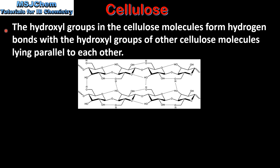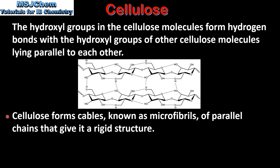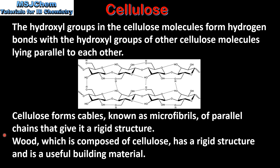The hydroxyl groups in the cellulose molecules form hydrogen bonds with the hydroxyl groups of other cellulose molecules lying parallel to each other. Here we can see two cellulose molecules lying parallel to each other. The dashed lines represent hydrogen bonds between the hydroxyl groups in the parallel cellulose molecules. Cellulose forms cables known as microfibrils of parallel chains that give it a rigid structure. This explains why wood, which is composed of cellulose, has a rigid structure and is a useful structural material.